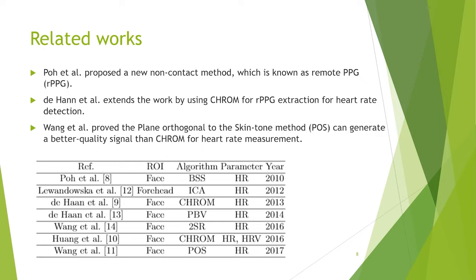One et al. showed that the plane orthogonal to skin tone can generate better quality signals. The major algorithms developed over the years for RPG signal extraction include blind signal separation, independent component analysis, chrominance-based pulse signature, spatial subspace rotation, and plane orthogonal to skin tone.